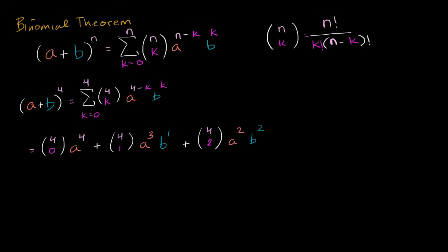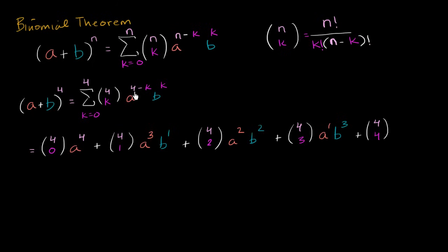We have two more terms. When k equals 3: four-choose-3 times a to the first times b to the third. And the last term, k equals 4: four-choose-4 times a to the zero — which is just 1 — times b to the fourth. So we've expanded it all out; we just need to figure out what four-choose-0, four-choose-1, four-choose-2, etc. are.